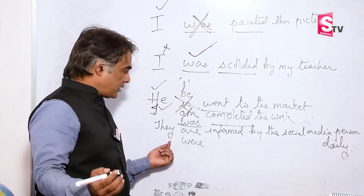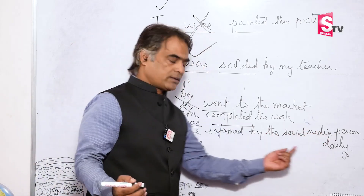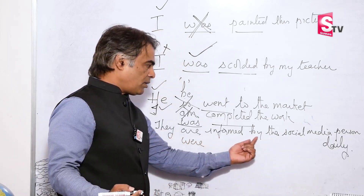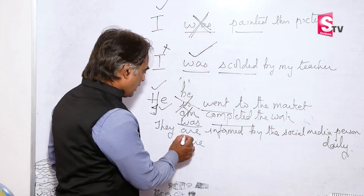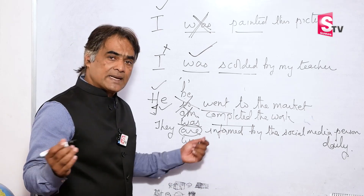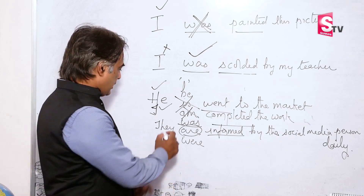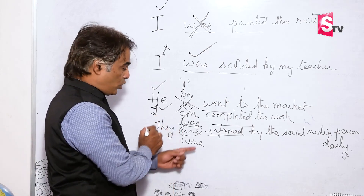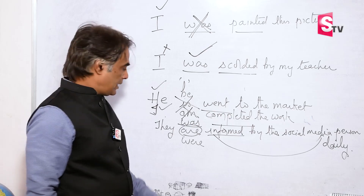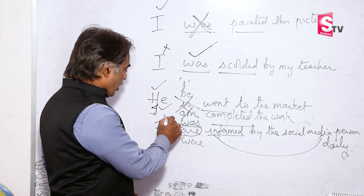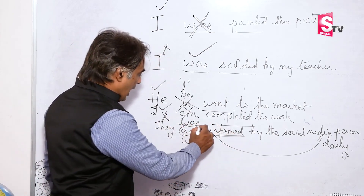Next sentence: 'They are informed by the social media person daily.' Apart from the B form of verb, what is the verb? 'Informed.' Who did the informing? They did the informing? No — the media person did. When they did not do the informing, 'are' is required.